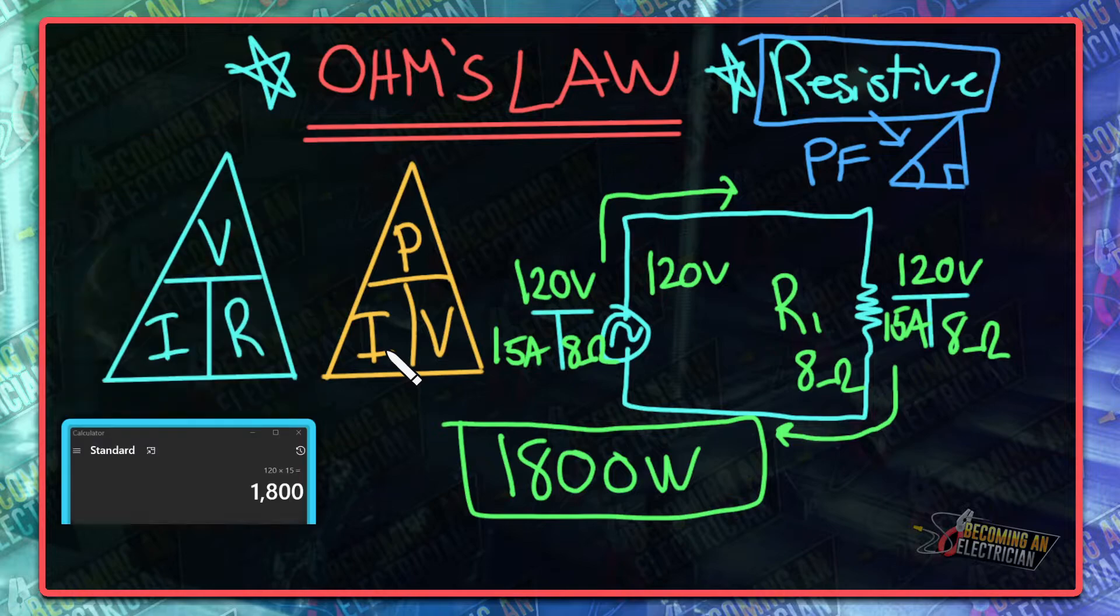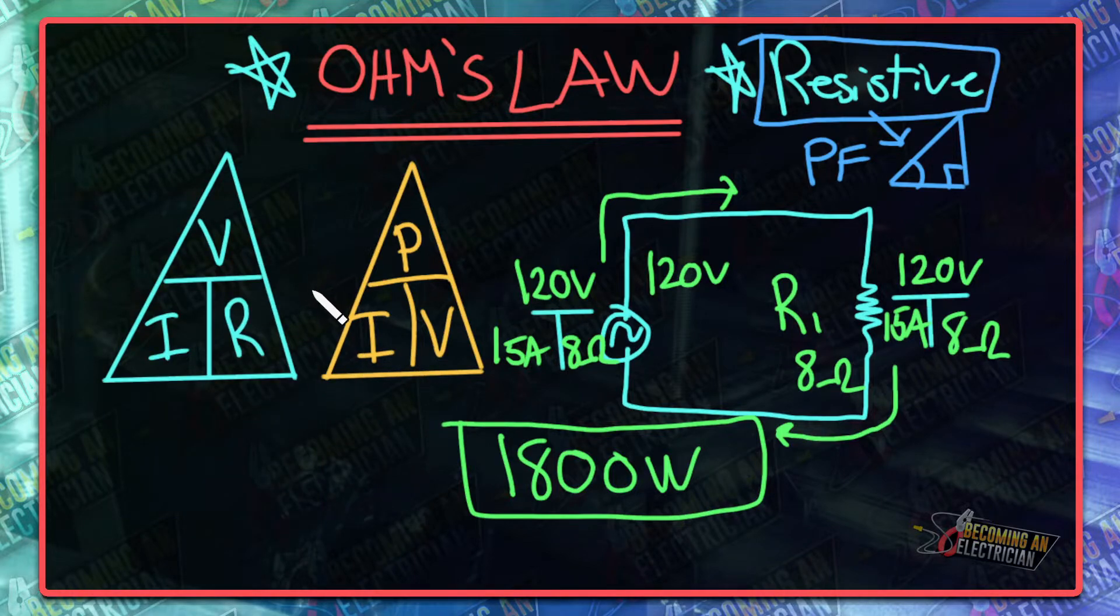That is what's called Ohm's Law. One thing to know about Ohm's Law is that resistance always has to be the same and remain constant, such as a baseboard heater, incandescent light bulb, or toaster. That's a resistive load.